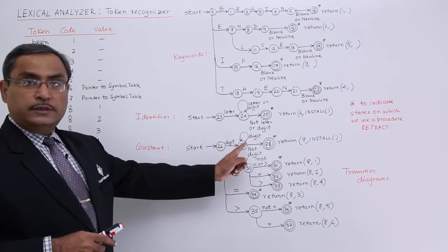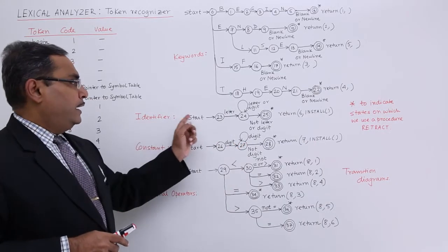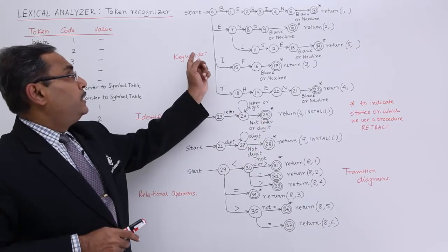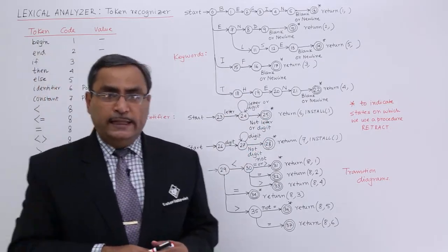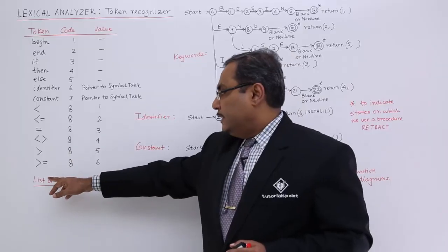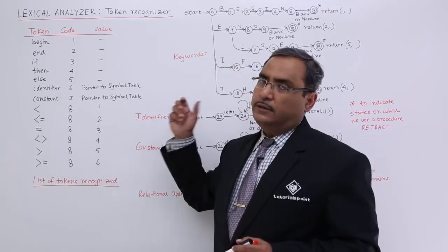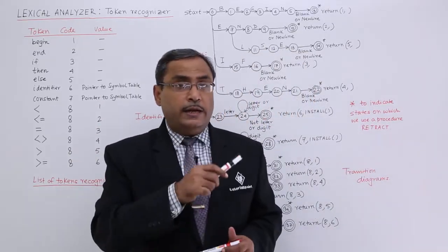In this way you see relational operators, this is the constant, this is the transition diagram for constant, transition diagram for identifiers, transition diagram for the keywords. In this way is the list of tokens recognized and the respective transition diagrams.